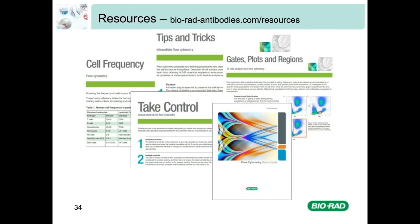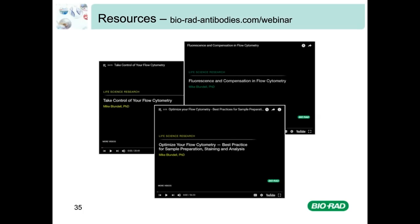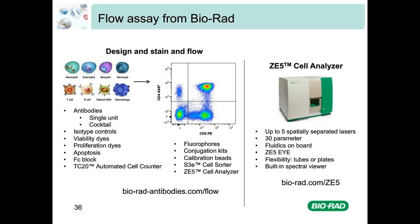In addition to this flow cytometry panel design webinar, in our resources section we have three other flow cytometry webinars, including one on controls essential for all flow experiments. We also have application-based webinars on topics such as mastering immunohistochemistry experiments and immunoprecipitation, and various research area webinars covering areas such as apoptosis — all available to view on demand. The last slide today is to inform you of all the antibodies, reagents, controls and instruments we have here at Bio-Rad. Antibodies — both single unit and cocktails with a range of fluorophores — viability dyes, proliferation dyes and easy-to-use apoptosis kits are available. Go to www.bioradantibodies.com for more details. And this brings me to the end of today's webinar.